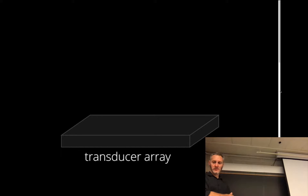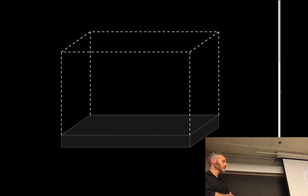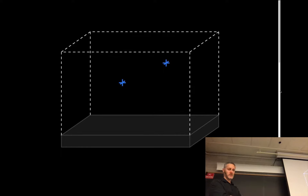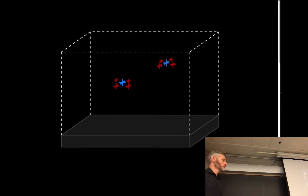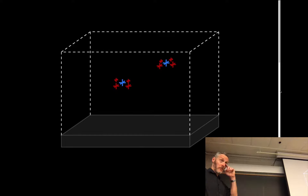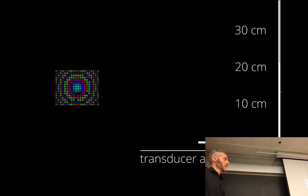Ultra haptics uses a phased array of ultrasound transducers to create tactile focal points in mid-air. The array is driven by a stack of five driver boards which receive emission patterns from a PC. The user's hands are tracked by a Leap Motion controller, and the haptic feedback is projected through an acoustically transparent display directly onto the user's bare hands. There are four steps to our unique focusing method: first, we define a large volume around the transducer array within which we model the ultrasound field. Then we position positive control points where we want to form focal points, telling the system to generate the highest intensity ultrasound at those locations.